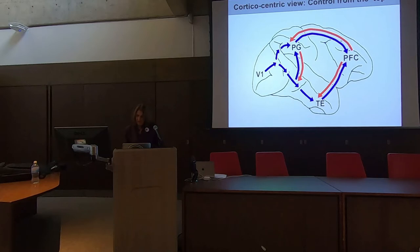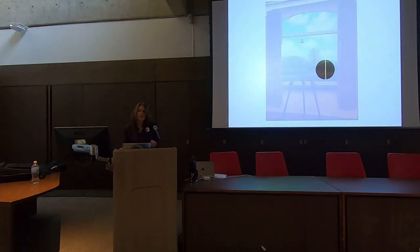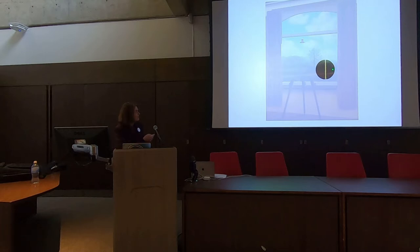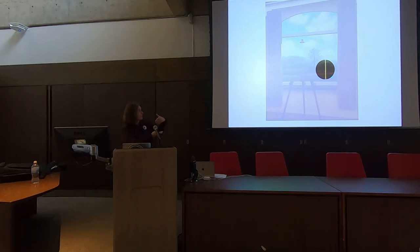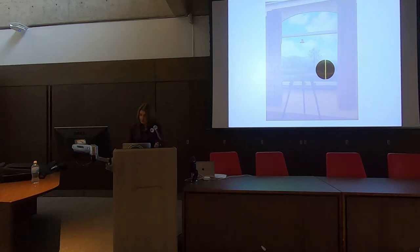Let me go back to the Magritte painting for a moment. When I described the spotlight of attention, I said it operates only over a relatively small and confined spatial extent. The way I introduced it is that once you allocate it, you take in whatever is in that spotlight in a sustained way — this is how we subjectively experience the allocation of attention. But I want to show you today that this is actually an illusion.